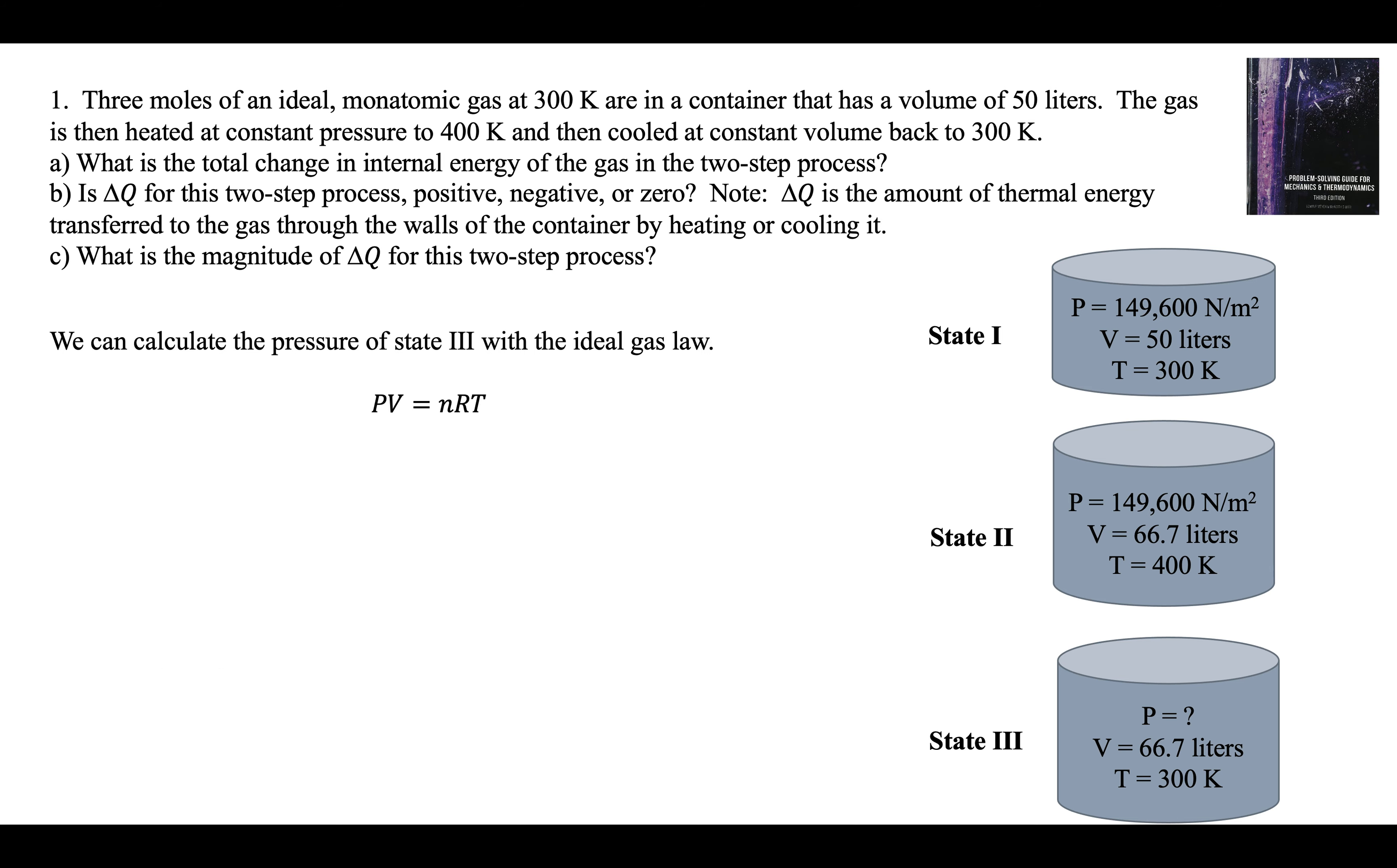And now the only thing we have to calculate is the pressure of state three. We use the ideal gas law. PV is equal to nRT. We have 300 kelvins in this volume now. And the pressure is now 112,200 newtons per square meter. Let's add that. So now we have three states.